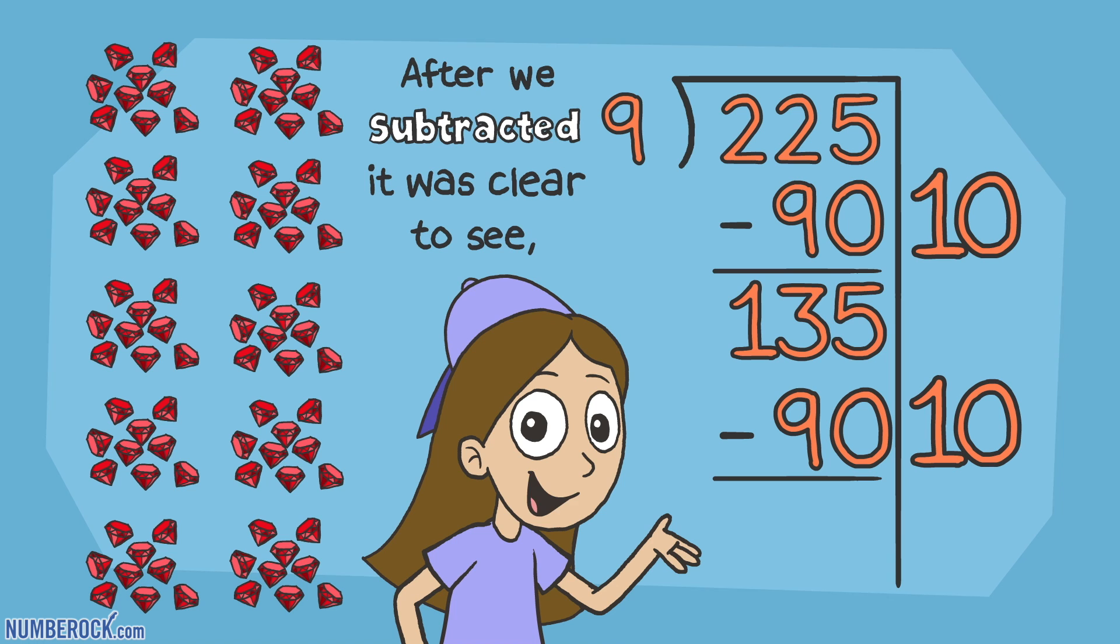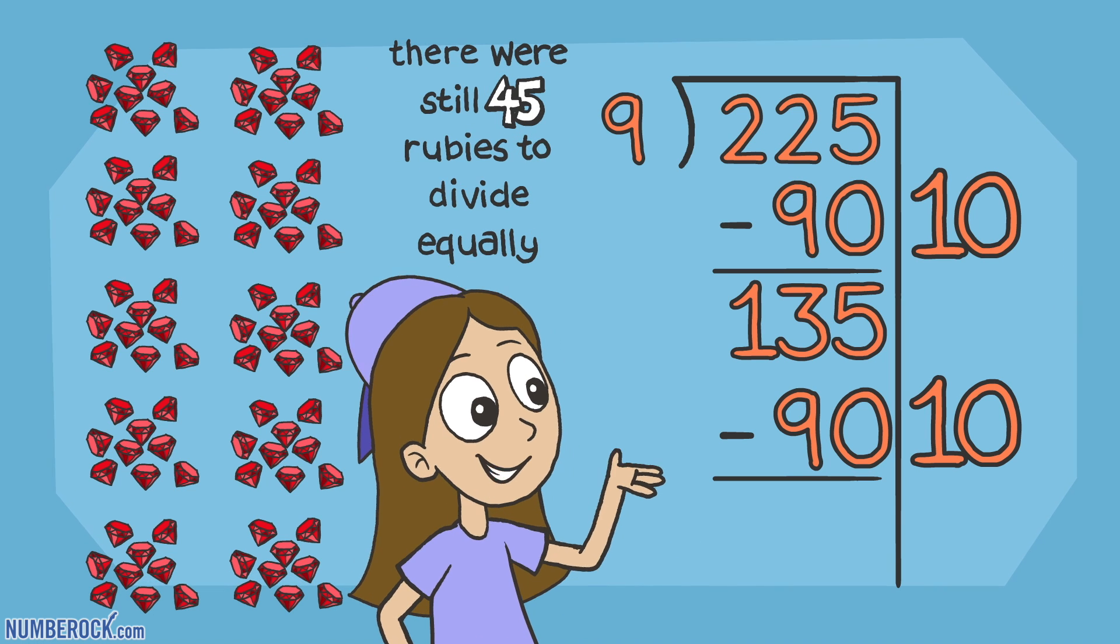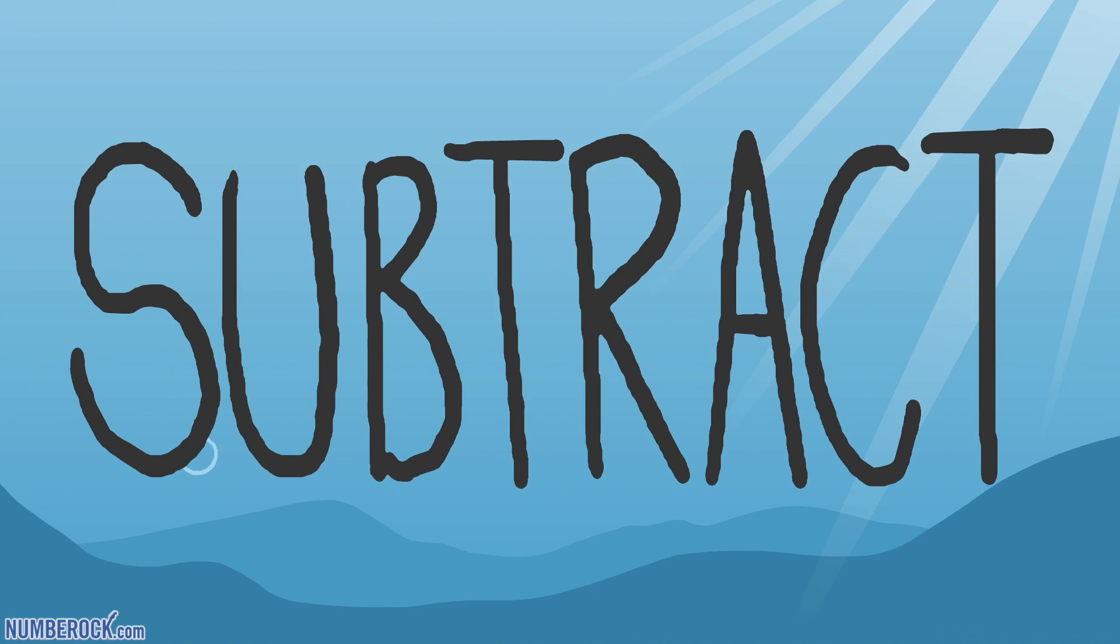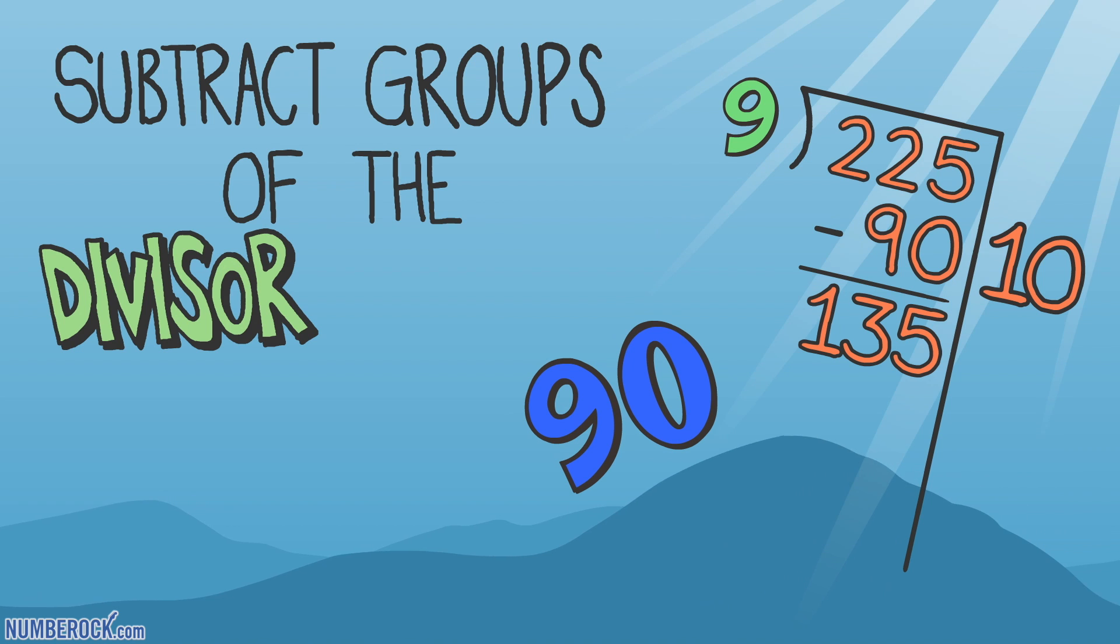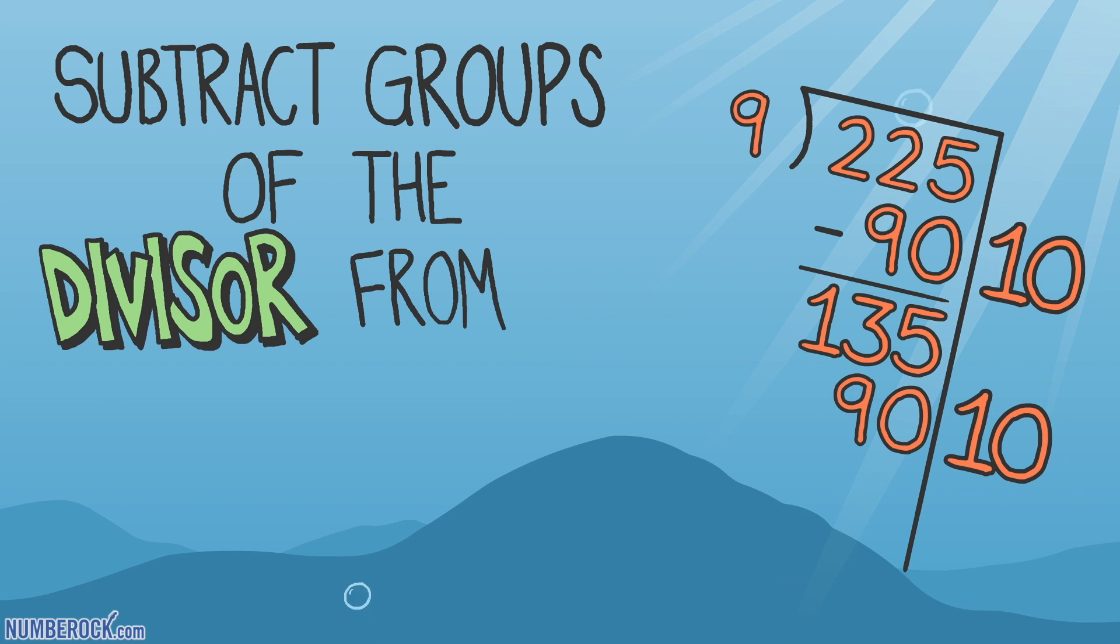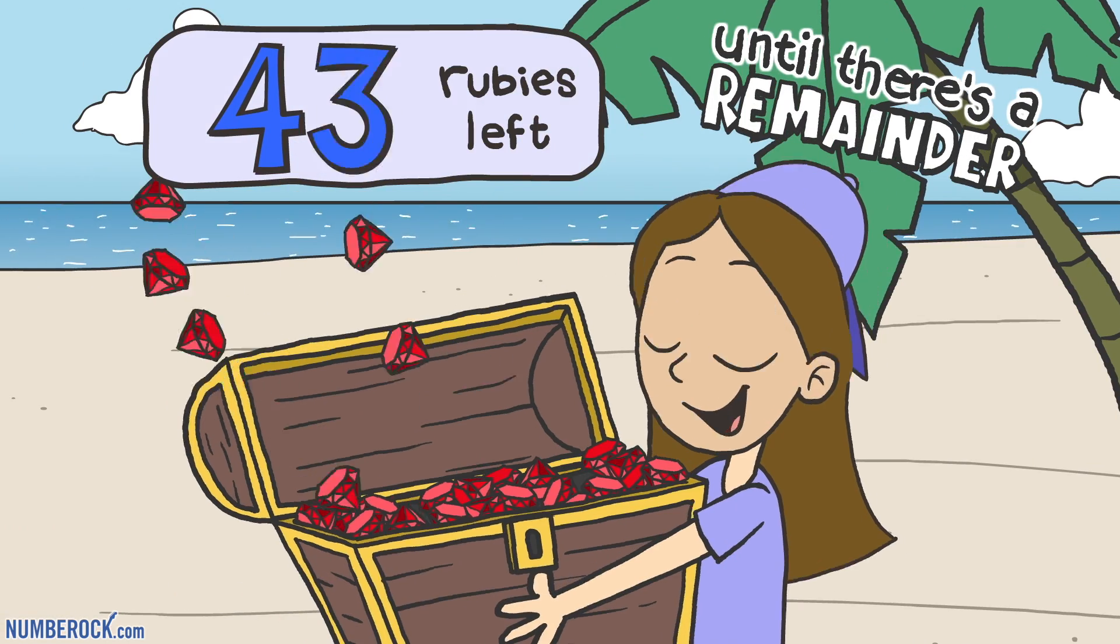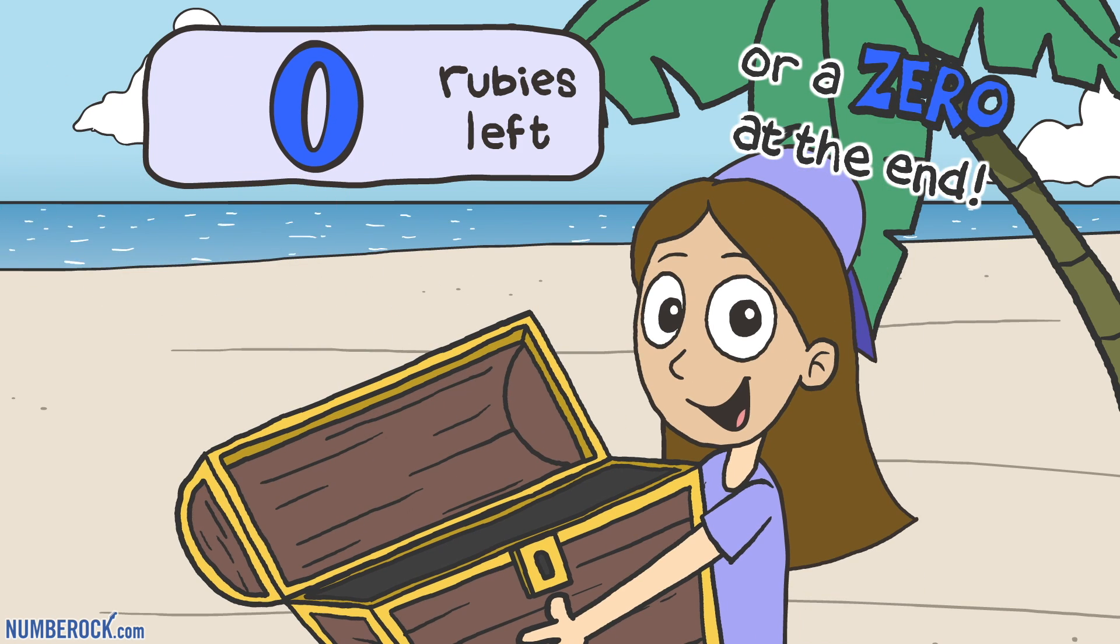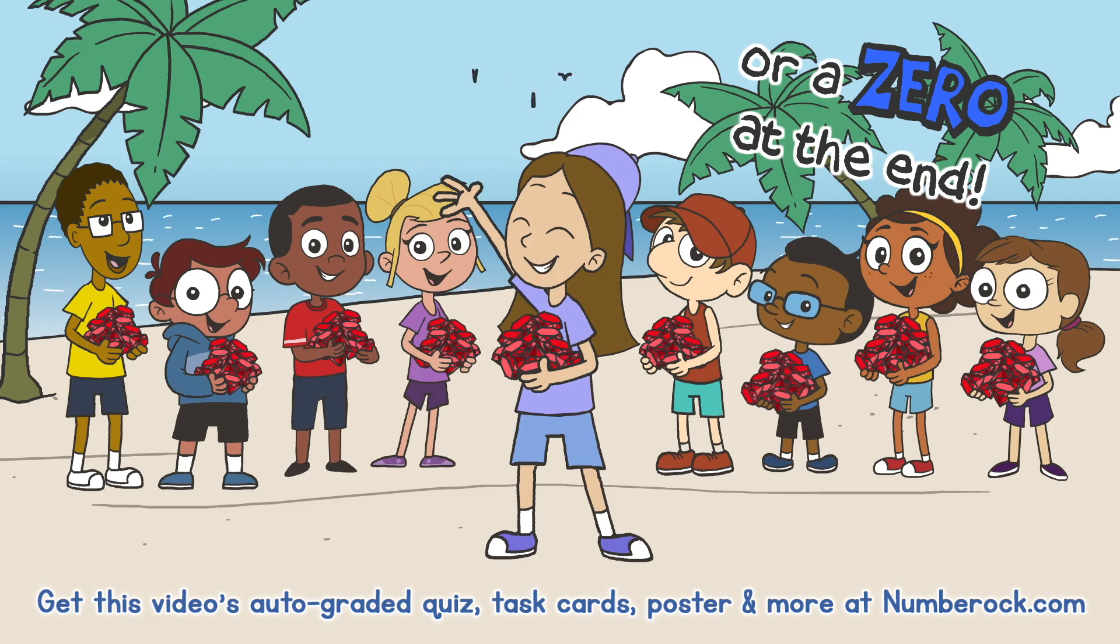After we subtracted, it was clear to see there were still 45 rubies to divide equally. Subtract groups of the divisor from the dividend until there's no remainder or a zero at the end.